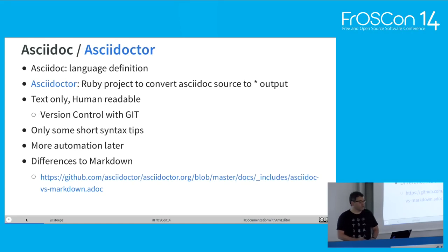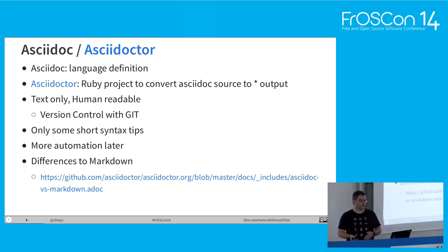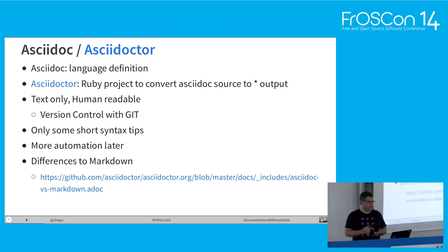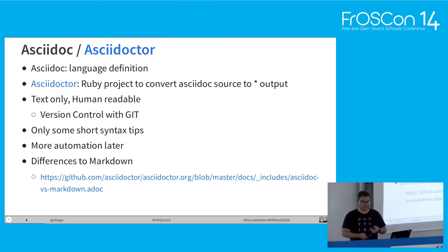So I switched to AsciiDoc and AsciiDoctor. AsciiDoc is the language definition; AsciiDoctor is a Ruby project which converts your text-only document to quite good-looking output. I can version-control the files. I'll show some syntax tips in this session, and later we'll automate some steps. If you're interested in the differences to Markdown, just follow that link — I've already uploaded the slide deck to the conference page.